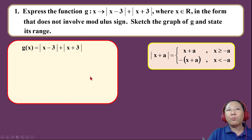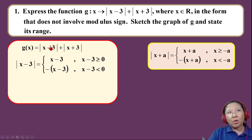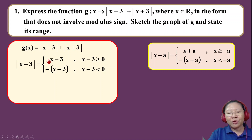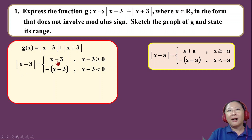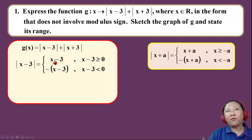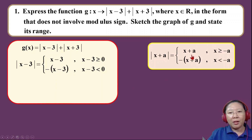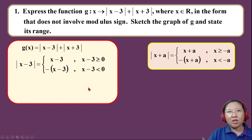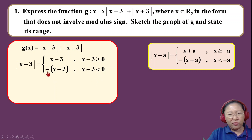If we follow the formula, we start to build out each modulus expression. We have two modulus equations here. I'll start with |x − 3|. We put x − 3 into the modulus formula — one case will be bigger than or equal to zero and the other will be less than zero. Anything less than zero gets a negative, and anything bigger than or equal to zero stays positive.